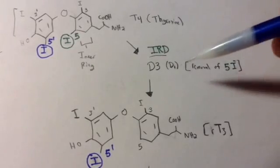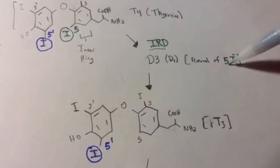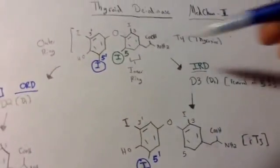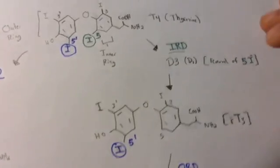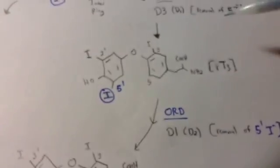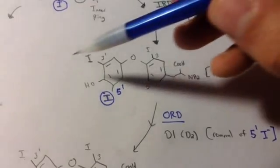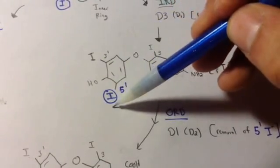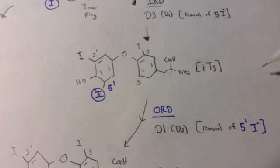And so what D3 does here is it removes the five iodine. And if we take a look at the picture, here's the five. So going to the next picture, the removal here of the five leaves us with three I's, and we get what's called rT3.